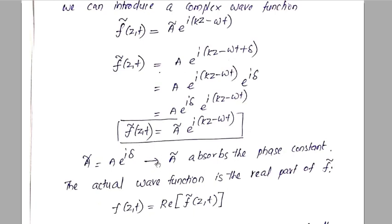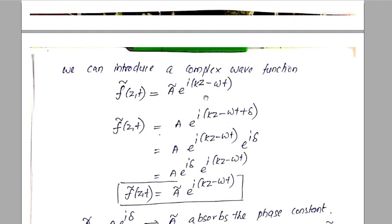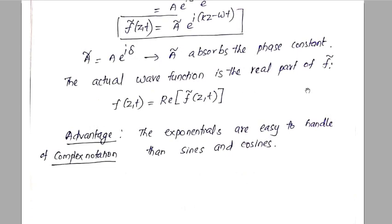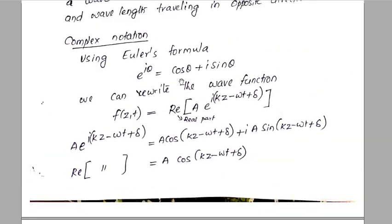The actual real wave function is the real part of the complex wave function f-tilde. The advantage of using complex notation is that exponential functions are easy to manipulate mathematically — easier than handling cosines directly. So we introduce the complex wave function for convenience of representation, but the actual physical wave function is always the real part of the complex wave function.